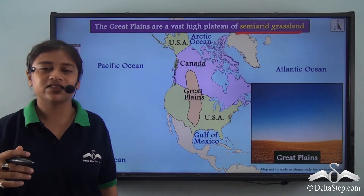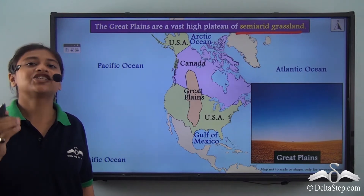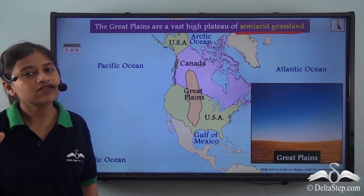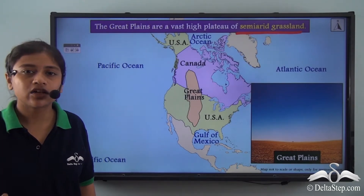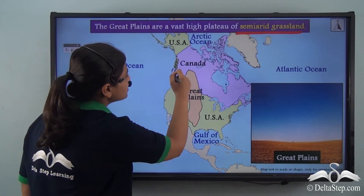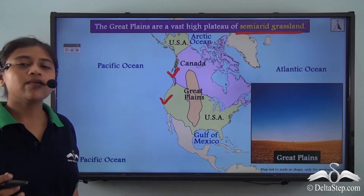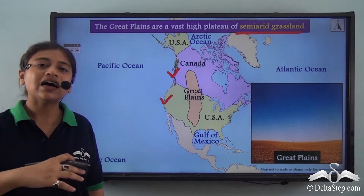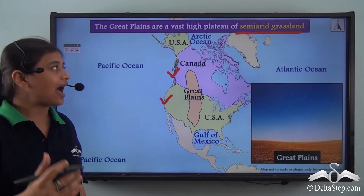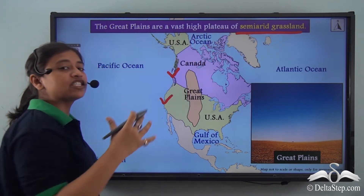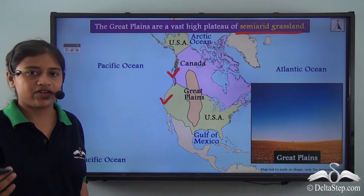The semi-arid grasslands, also known as prairies, are one of the most valuable natural biomes of the continent of North America. The prairies, as part of the Great Plains, mostly include the Canadian Prairies and the Prairies of the USA, which make up the high plateau region of semi-arid grasslands.